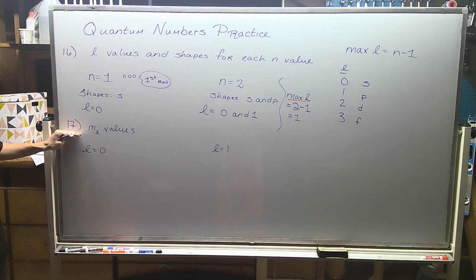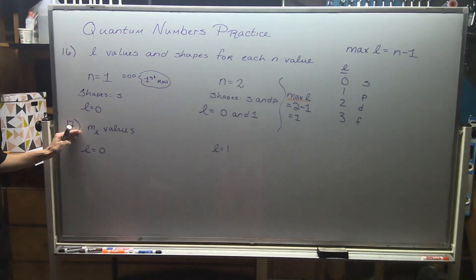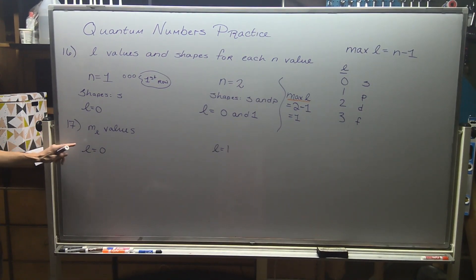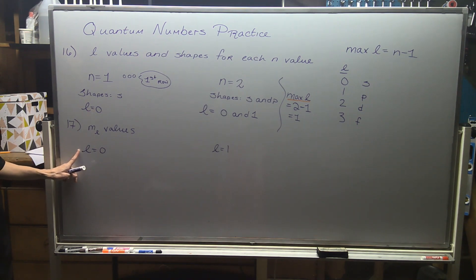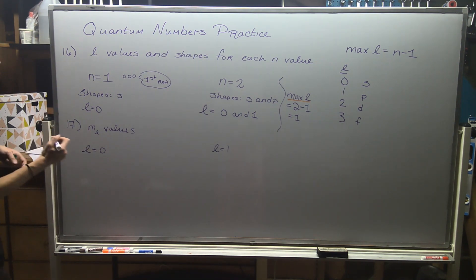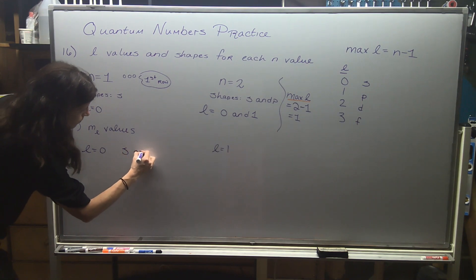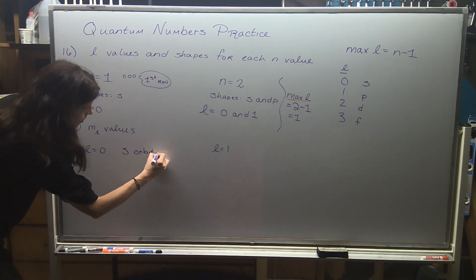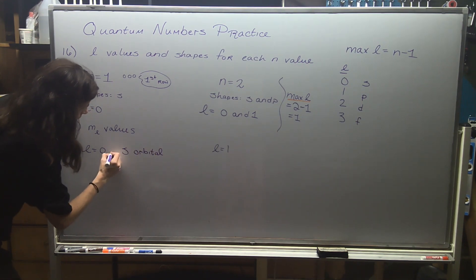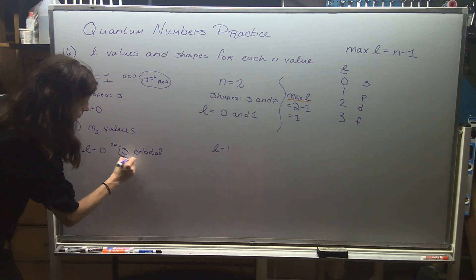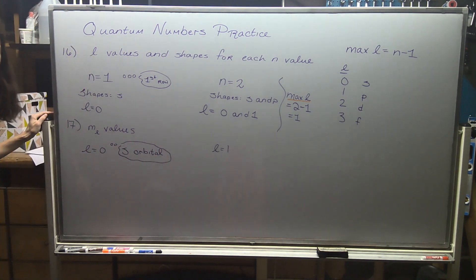The second question gets deeper into the quantum numbers — now we're talking about orientations. If we have l equals zero, the first thing I want to think about is what kind of shape that corresponds to. That's going to correspond to an s shaped orbital. So when I see l equals zero, I'm dealing with s orbitals.